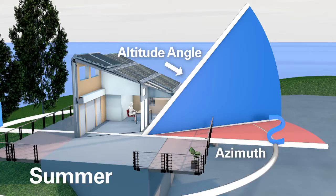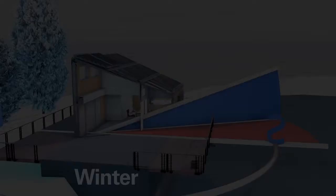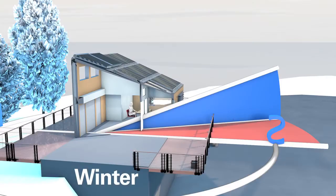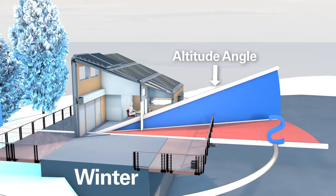In the summer, the earth tilts the northern hemisphere towards the sun, so the angle between the solar ray and horizontal projection is greater. During the winter, the southern hemisphere is tilted towards the sun, creating a lower solar altitude angle for northern residents.